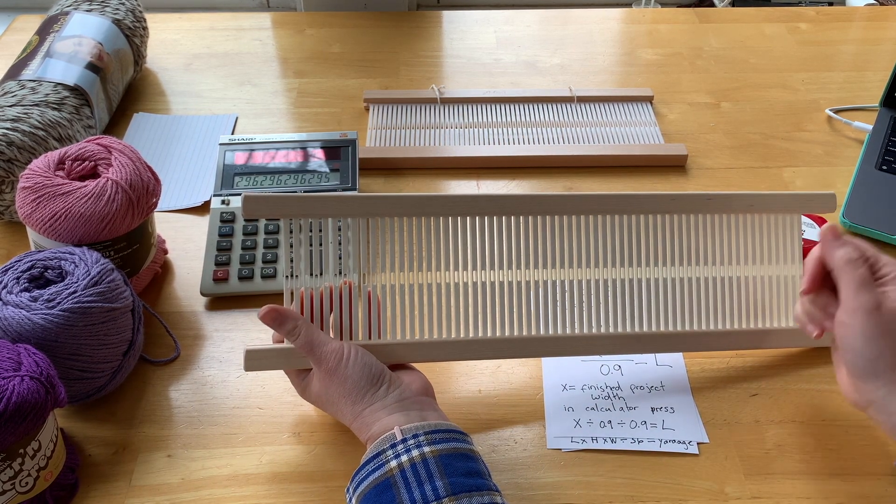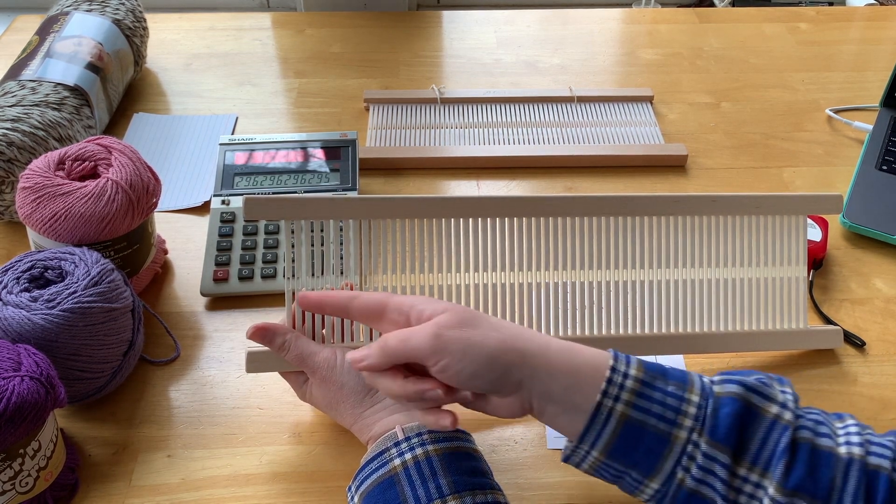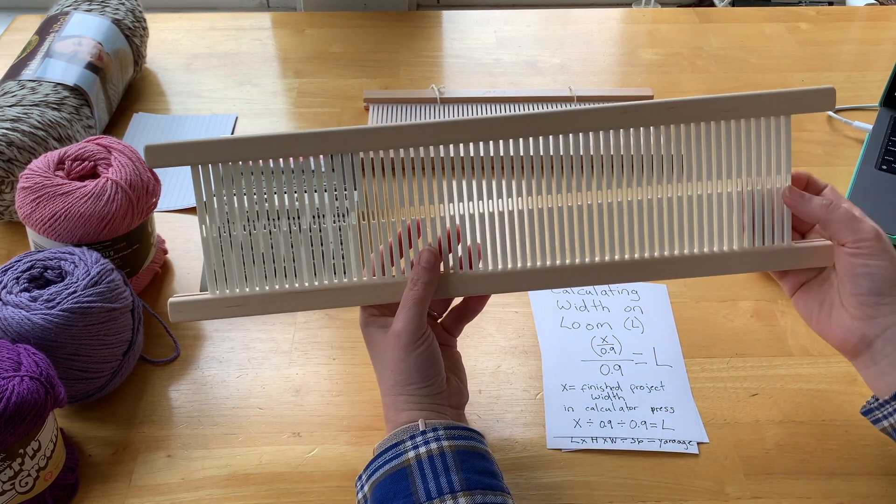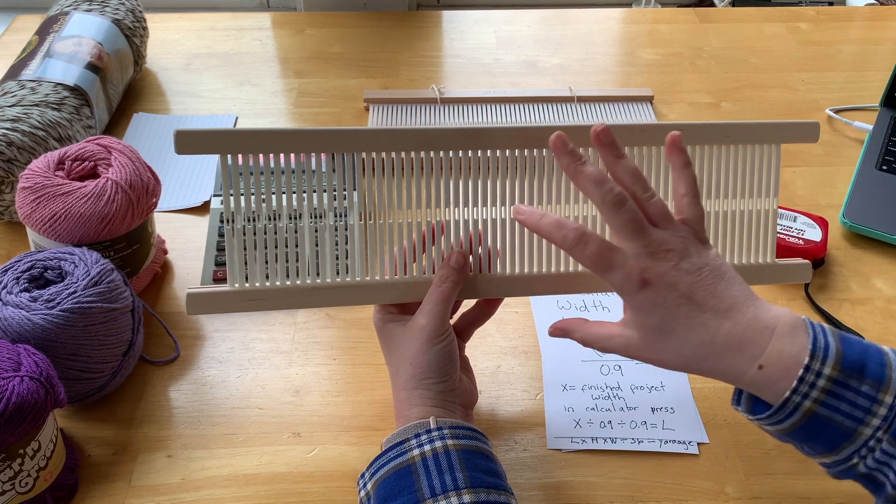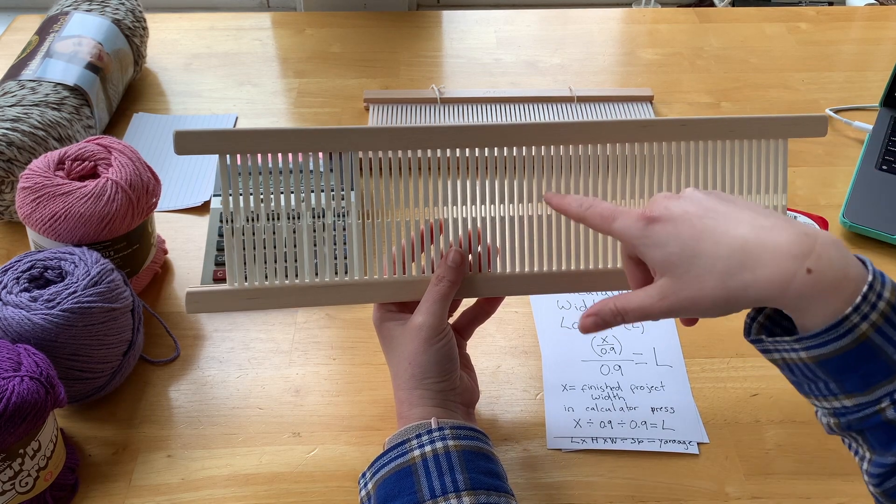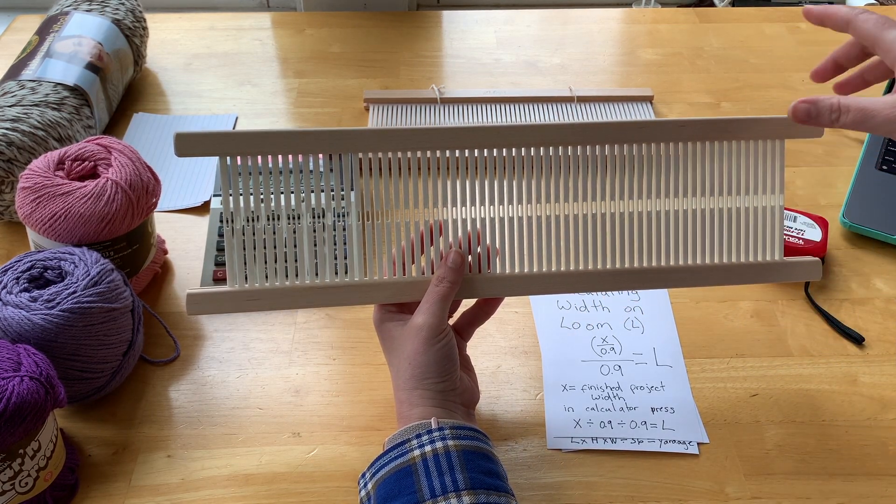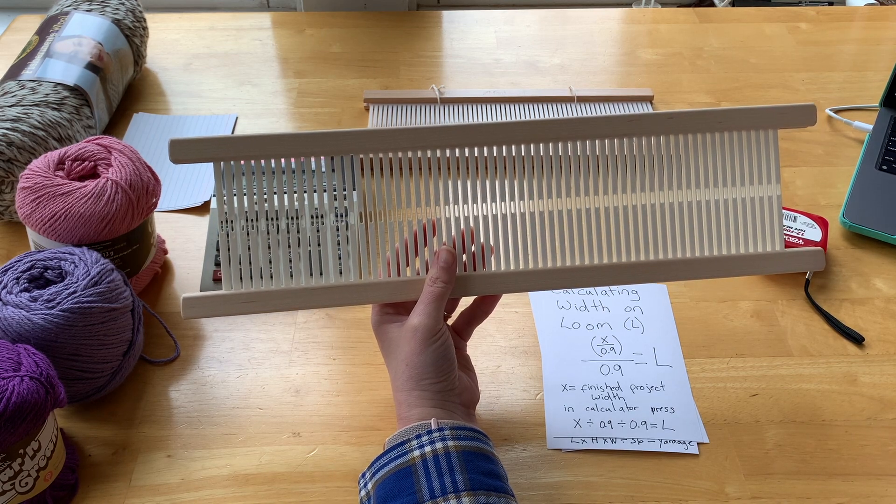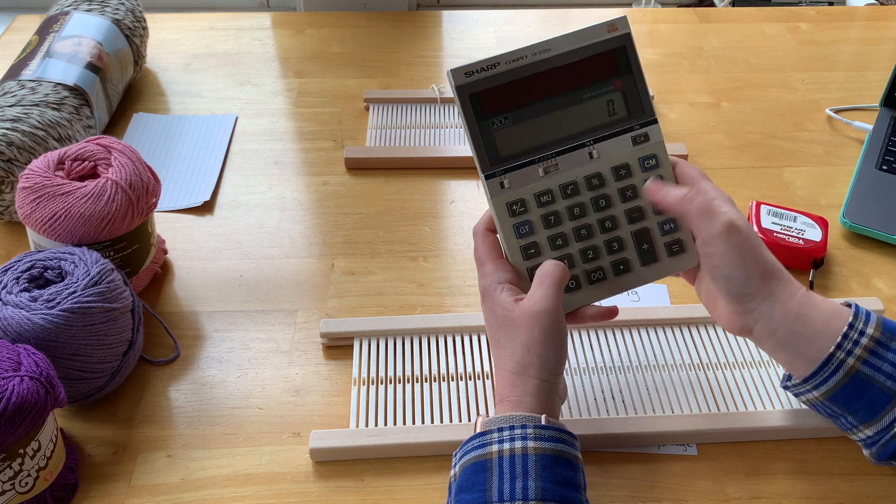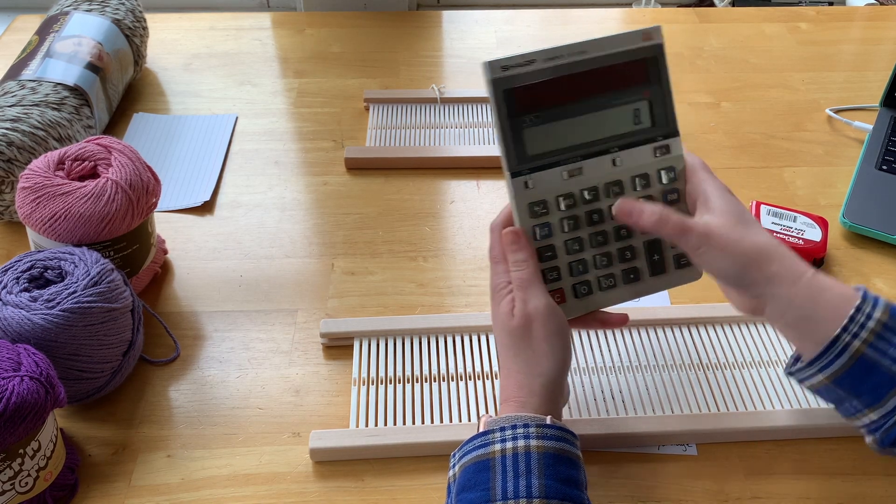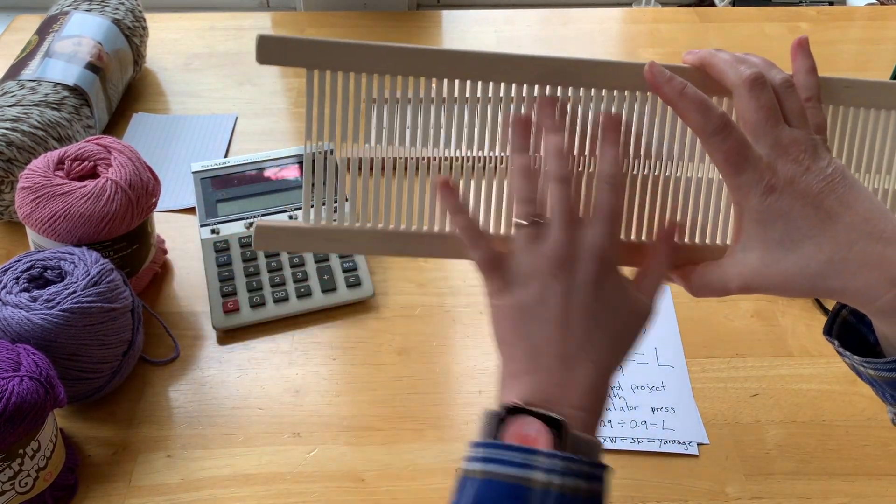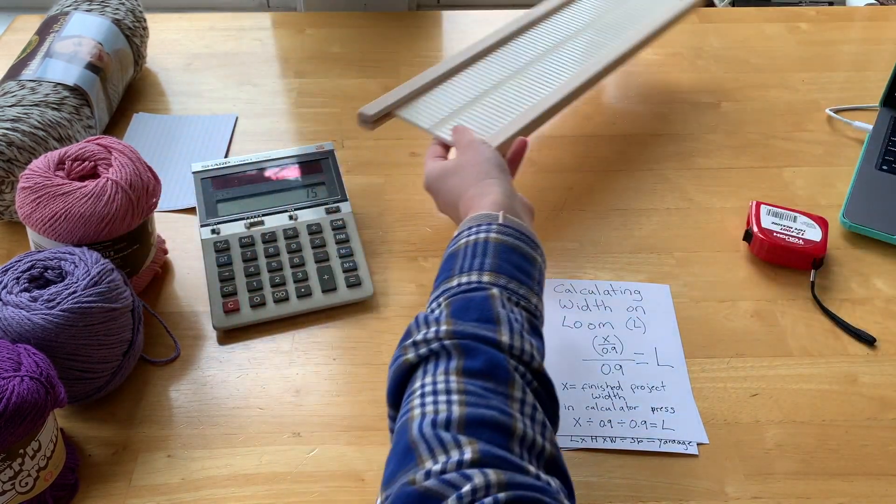I went ahead and did that, and this particular one has 60 holes. So you times 60 by 2 to account for the fact that you'll put a thread through the hole and then the slot, hole-slot-hole-slot all the way to the end. And I end up with 120 ends. This is an 8-dent heddle, so if I divide 120 by 8, I should get 15. So this has enough room to do 15 inches.